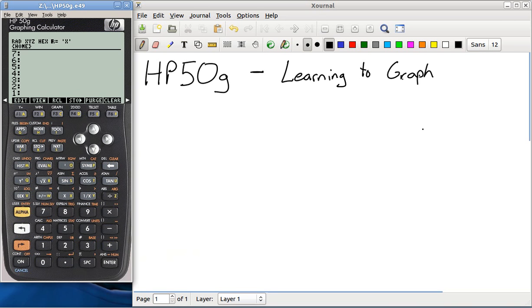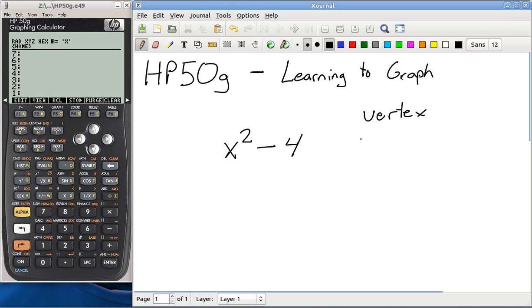Alright, welcome to my tutorial on the HP50G graphing calculator. We are going to learn how to graph. To do this, we're going to start with the equation x squared minus 4. We're going to graph that line and then try to come up with the vertex and also the x-intercepts.